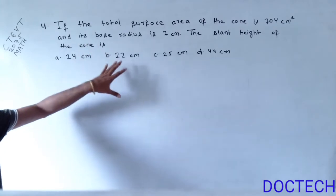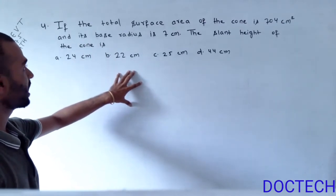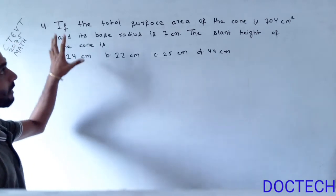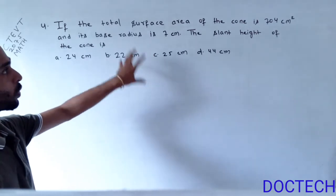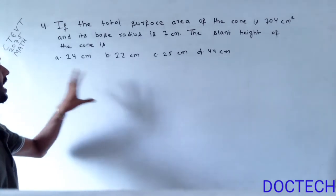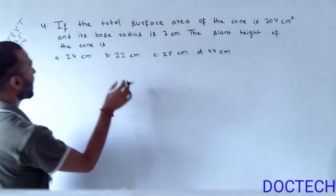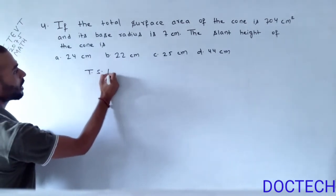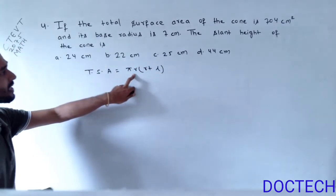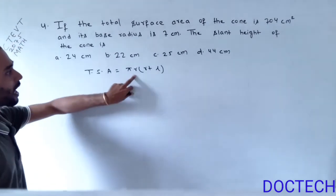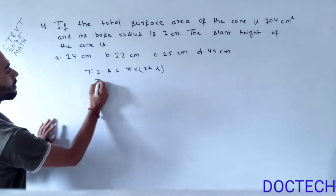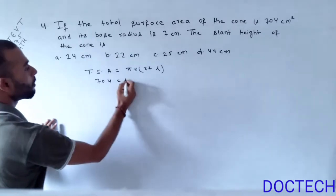The next question: the total surface area of the cone is given, the base radius is also given, and we have to calculate the slant height of the cone. The total surface area of the cone is pi times R times (R plus L), where R is the base radius and L is the slant height. The total surface area is 704.